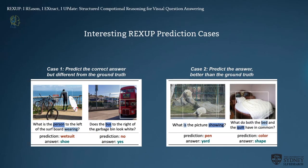In addition, we found that sometimes our model's prediction is more accurate than the annotated answer in the dataset. For example, in the first image of case 2, 'pen' — a small enclosed area for keeping animals — is more accurate than the annotated answer 'yard.' Likewise, in the second image, the bed and quilt are in different shapes but both in white color, making our prediction correct while the ground-truth answer may be incorrect.